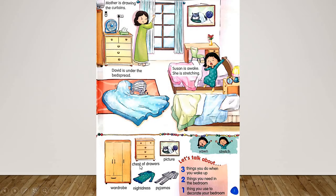Chest of drawers — these are all drawers here. Picture — here you can see the picture of a cat. Pajamas — David is wearing pajamas. Night dress — Suzan is wearing a night dress. Yawn. Stretch.